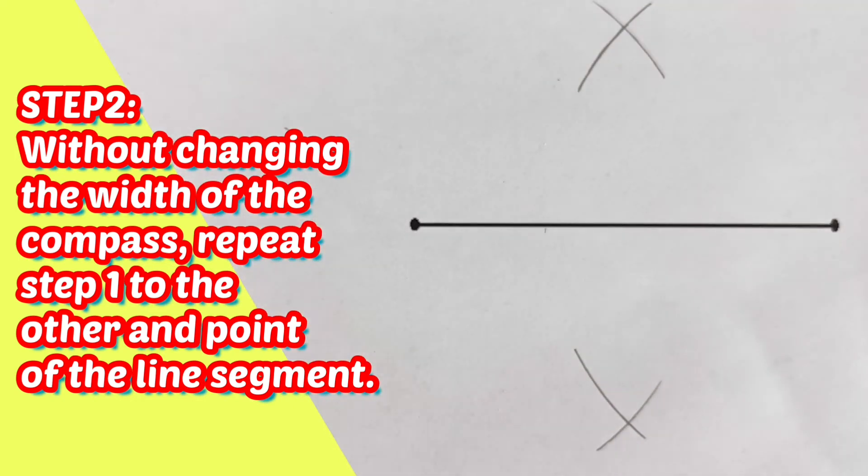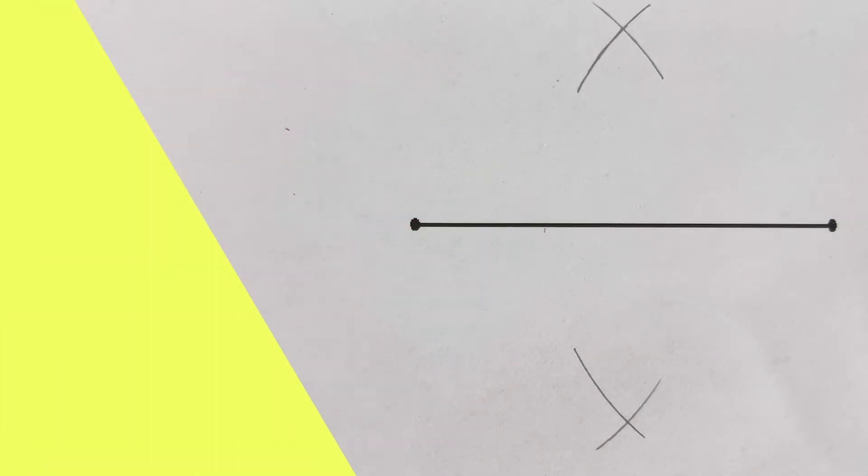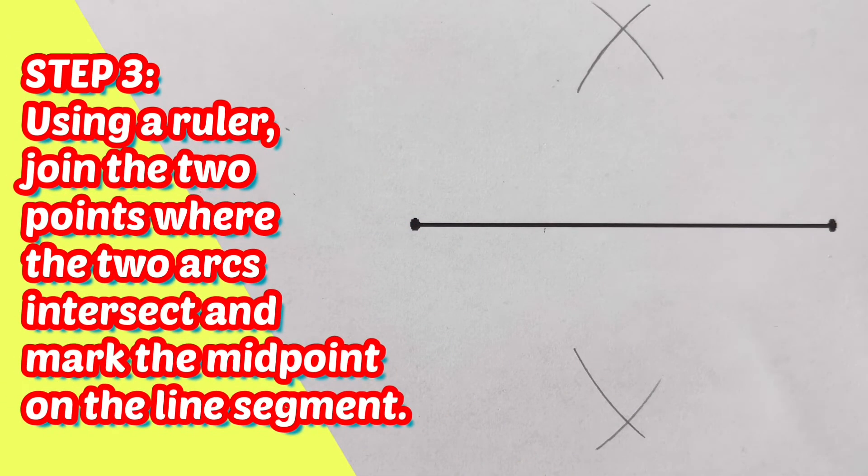And then from here, we are going to move on to the third step. The third step states that using a ruler, join the two points together. So the two points that we have here, where the two arcs intersect and mark the midpoint of the line segment.